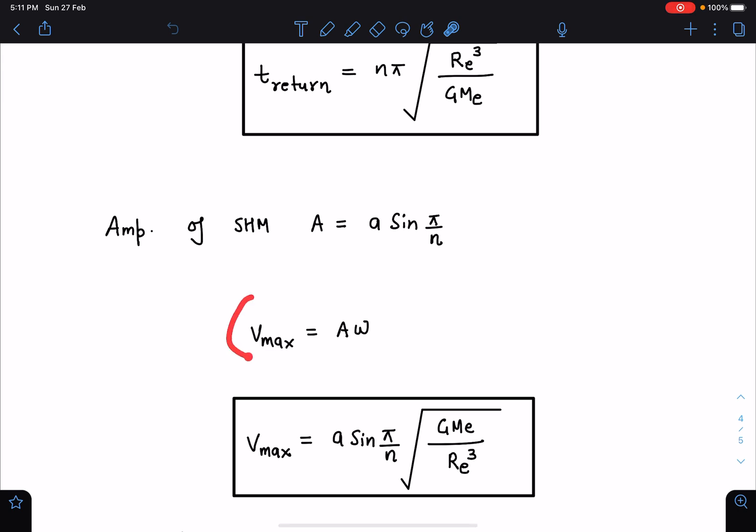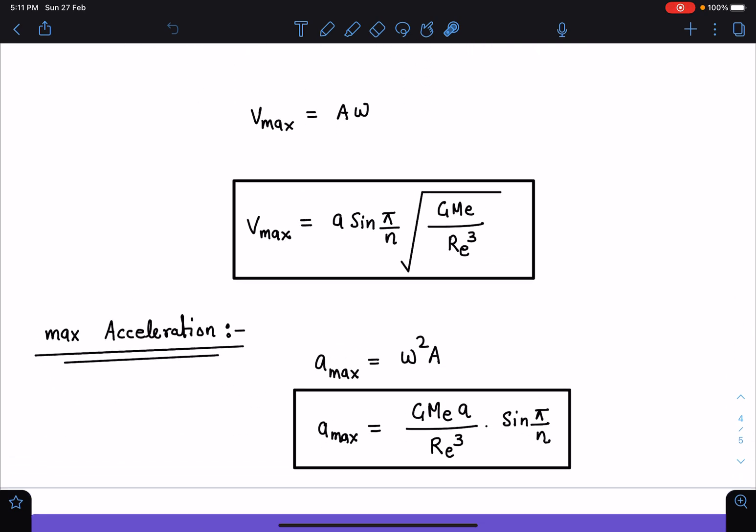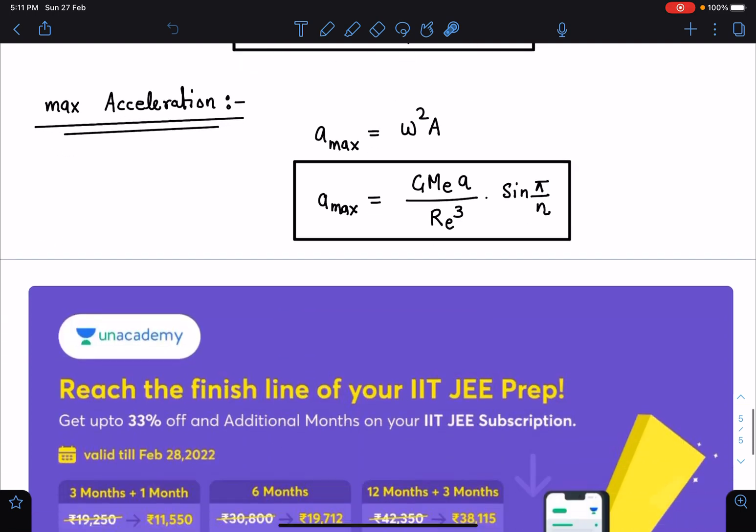Maximum speed of particle in SHM I can write as A·ω. So directly I can substitute the values and I will be getting V_max = A·sin(π/N)·√(GM_E/R_e³). Similarly here max acceleration I can find, that is going to be ω²·A, so GM_E·A·sin(π/N)/R_e³.